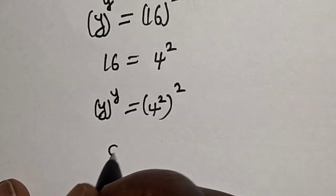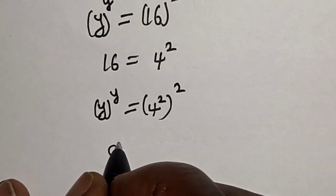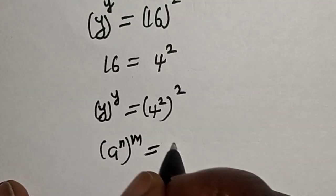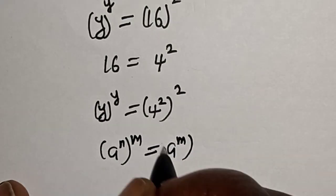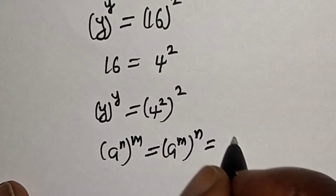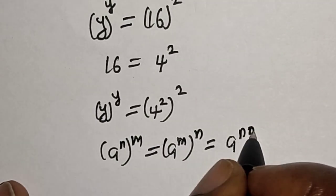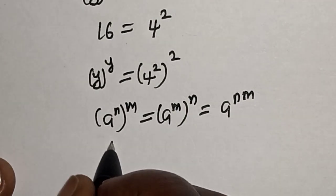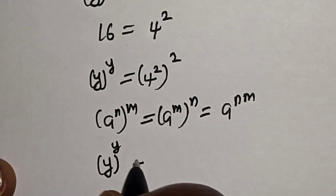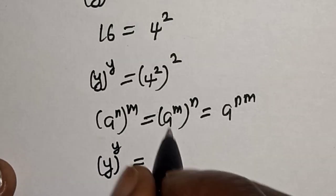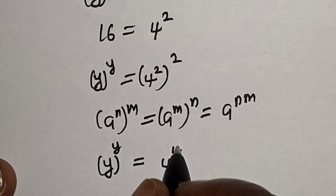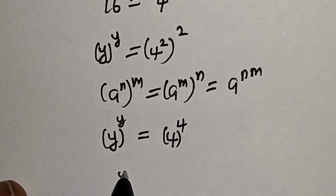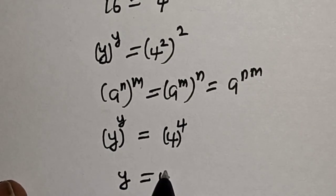Remember the rule that a raised to power n raised to power m is equal to a raised to power m raised to power n, which equals a raised to power n times m. Then this becomes y raised to power y is equal to 4 raised to power 2 times 2. Now by comparing, y is equal to 4.